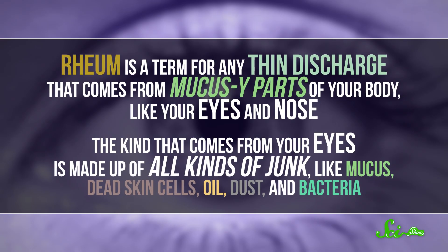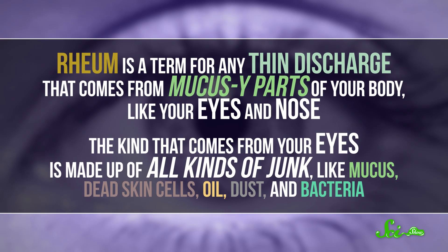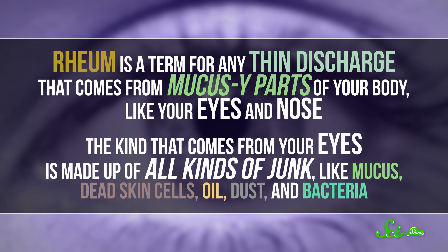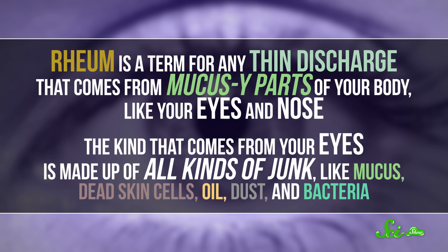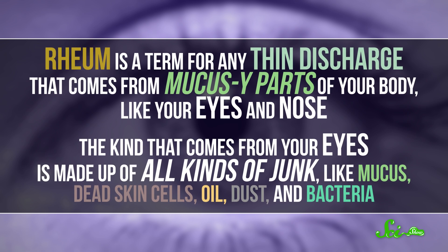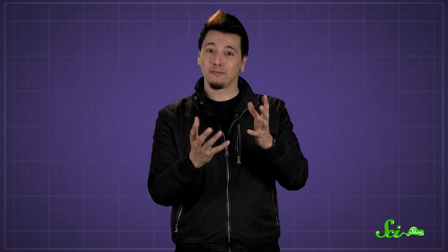Rheum is a term for any thin discharge that comes from a mucousy part of your body, like your eyes or nose. The kind that comes from your eyes is made up of all kinds of junk, like mucus, dead skin cells, oil, dust, and bacteria.